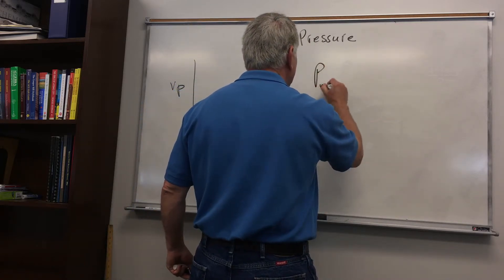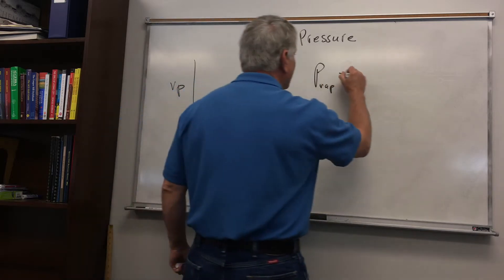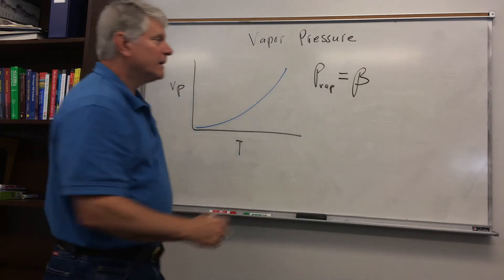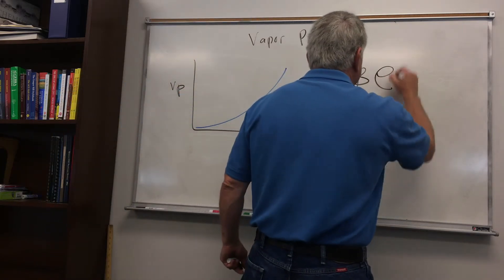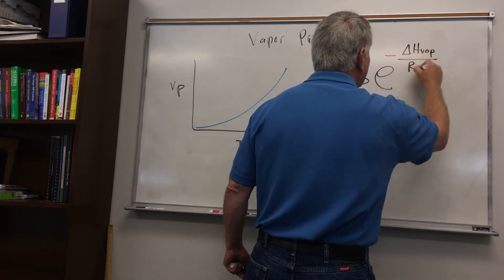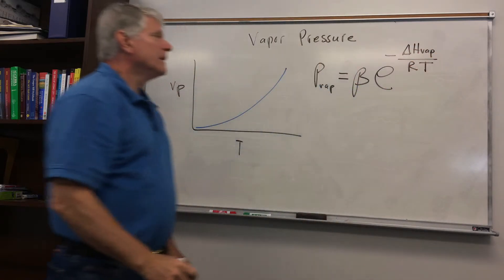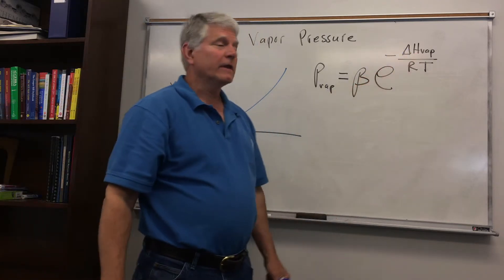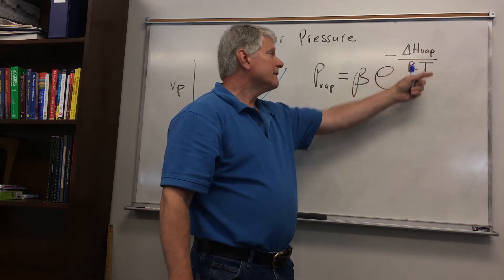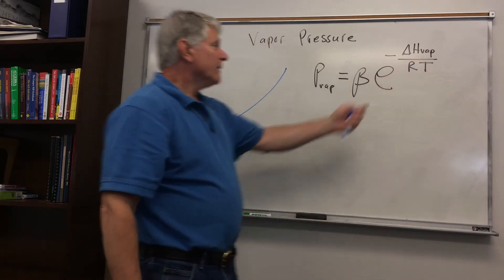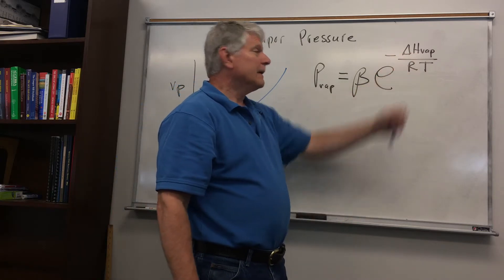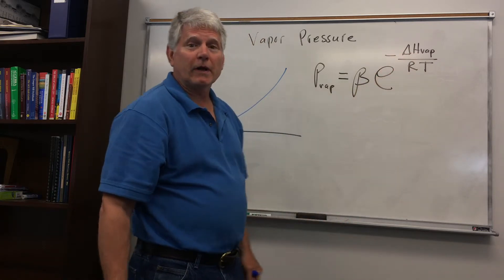We can quantify this with the following expression: the pressure of the vapor above a liquid is equal to a constant beta times e to the power of negative delta H vaporization divided by RT. Here, delta H is the enthalpy of vaporization of the liquid, R is the ideal gas constant in energy units (joules per Kelvin per mole), and T is temperature.